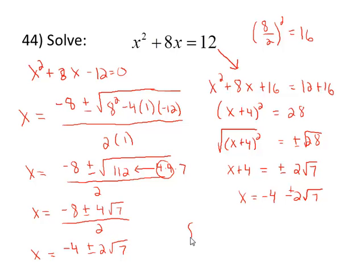Two different techniques to go. Use the one that's more efficient for you. I'm writing this as a solution set: {-4 - 2√7, -4 + 2√7}.